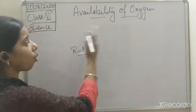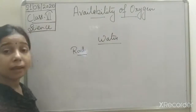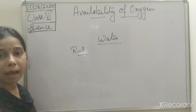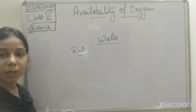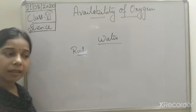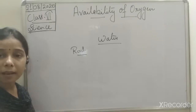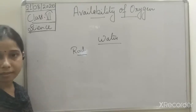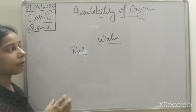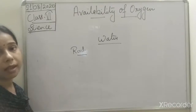Now, regarding the availability of oxygen in water — dissolved oxygen is present in water which is used by plants and animals for the process of respiration. Oxygen is dissolved in water, and this oxygen is given by aquatic plants through the process of photosynthesis. They perform photosynthesis and release oxygen, which is further used by aquatic animals.